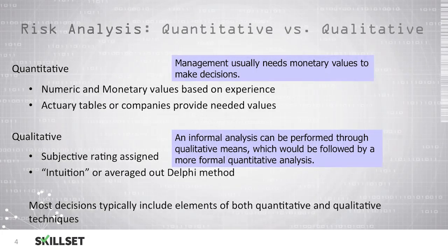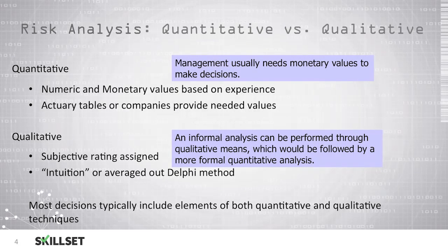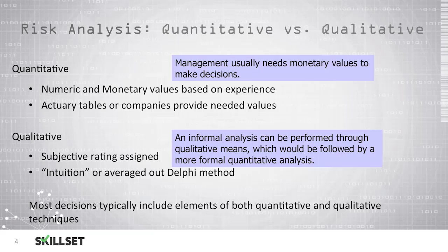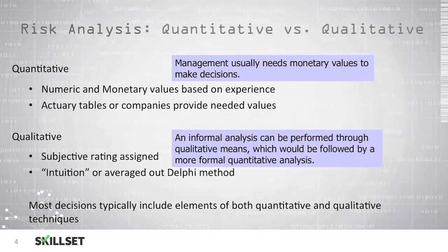A quantitative risk analysis uses numeric and monetary values based on the values of your assets and based on experience with how often a disaster might occur in your area. Typically companies or actuary tables will be used to provide the needed values, and managers usually prefer a quantitative analysis because they will use monetary values to make decisions. A qualitative risk analysis is based on a subjective rating system and generally uses an individual's intuition or an average using the Delphi method. Qualitative risk analyses are typically informal and are performed first, then followed up by a more formal quantitative analysis. Typically decisions will include elements of both types of techniques.